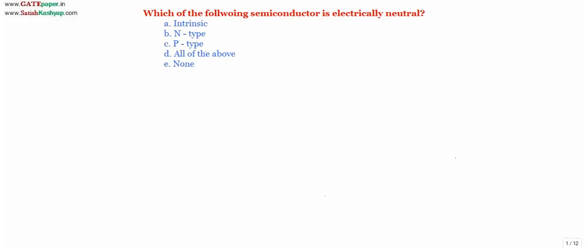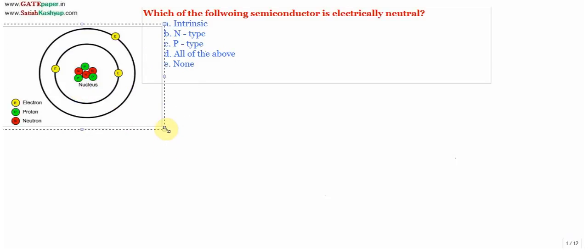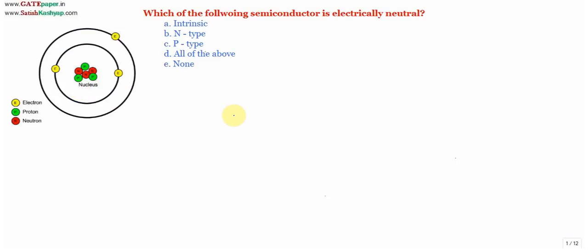Before going further, first we will look at a general atom — whether it is electrically neutral or not. Every atom is electrically neutral because every atom consists of equal amounts of positive charge and negative charge. An atom consists of a nucleus with protons and electrons. The neutron is neutral in charge, while protons and electrons carry charges.